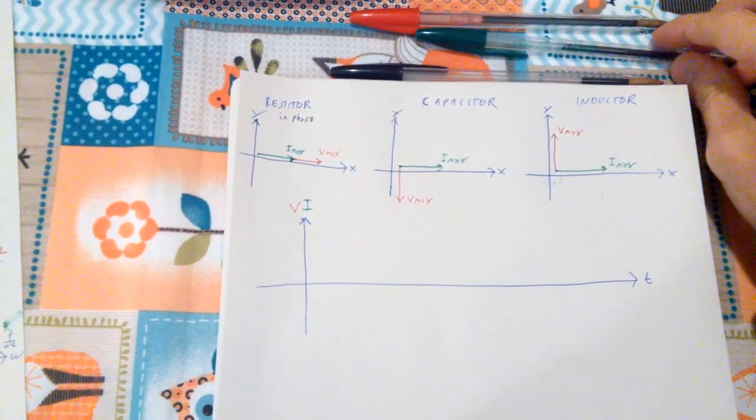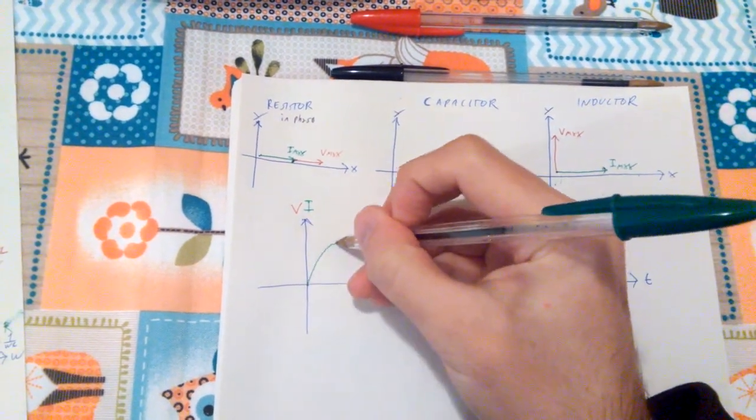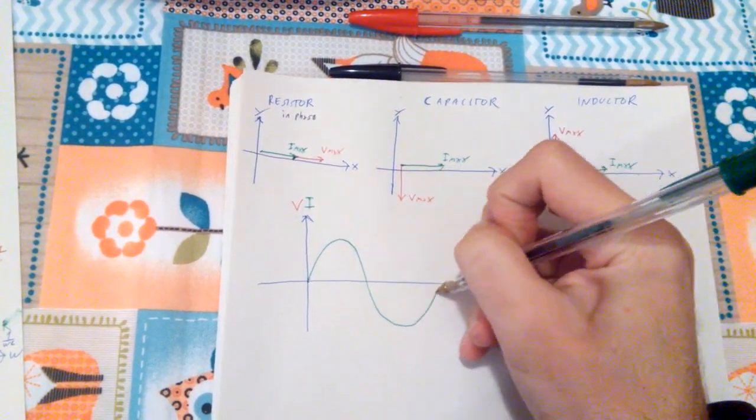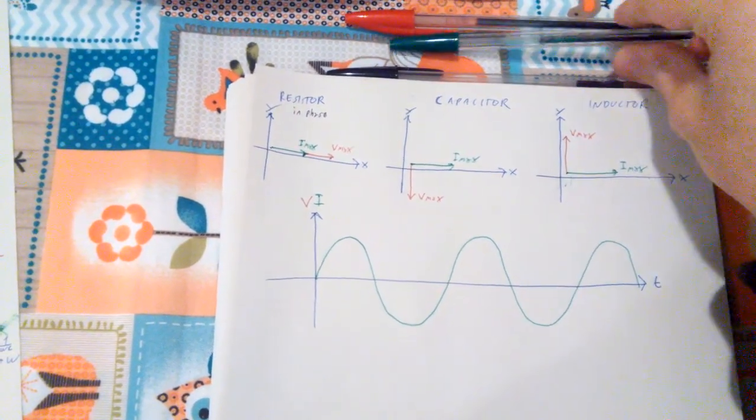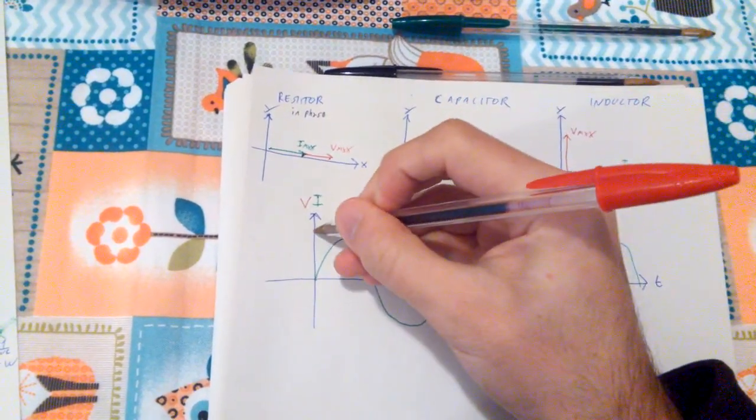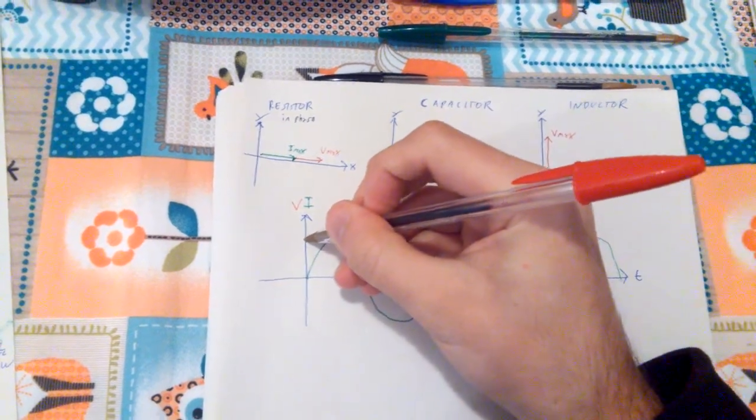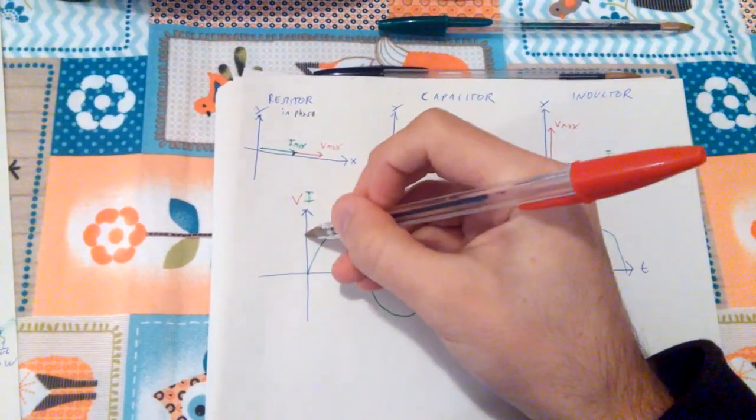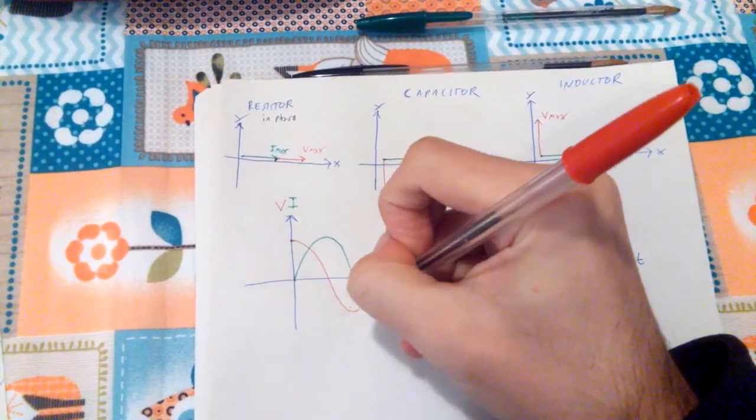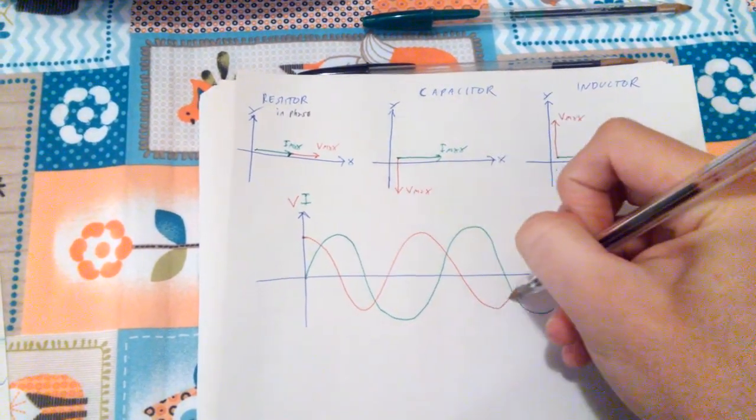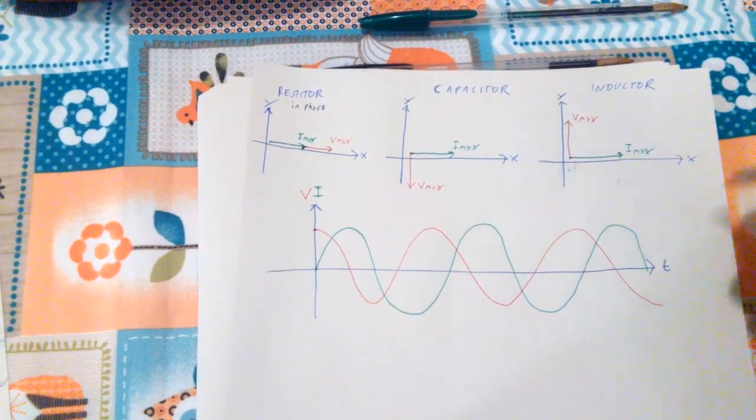Well, in this case, we're going to have the current and then the voltage 90 degree apart from one another. So having them 90 degree apart will basically mean that they are like this.